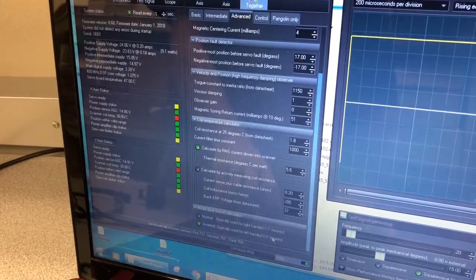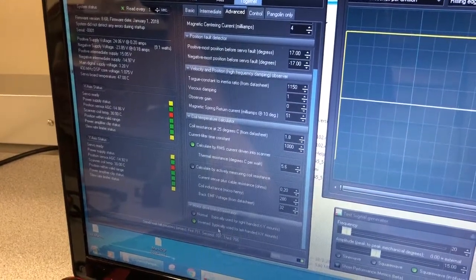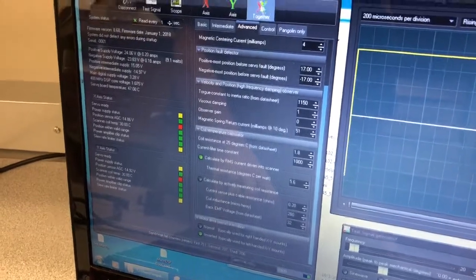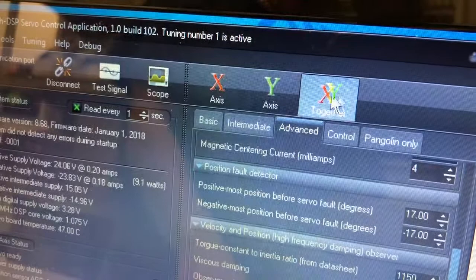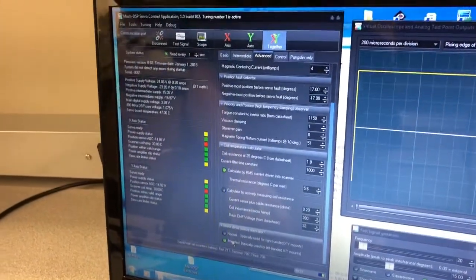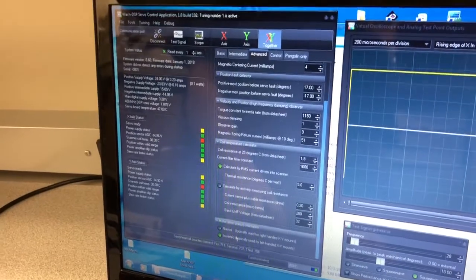And so normally the normal is for right-handed and it says right here for right-handed XY mounts and inverted is for left-handed. And what we just did here with the screws is go to left-handed and make sure you have this button up here. Press X and Y together when you click on here, the inverted, so that it will change both X and Y to this.